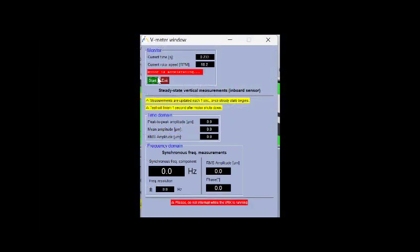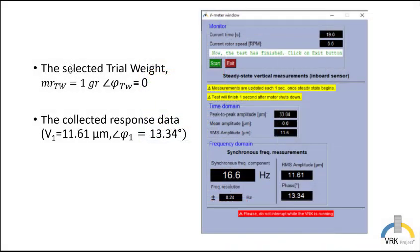Now we click start. And again, we start the accelerating process. It reaches the steady state, 1000 RPM. Now we calculated the amplitude and the phase angle. This amplitude is due to the original unbalanced plus the trail weight that we applied to the system. Now we have five seconds in the steady state. And after the system starts deaccelerating. And eventually the system stops. We know that the selected trail weight was one gram at zero degrees, and the collected data was 11.61 microns at 13.34 degrees.